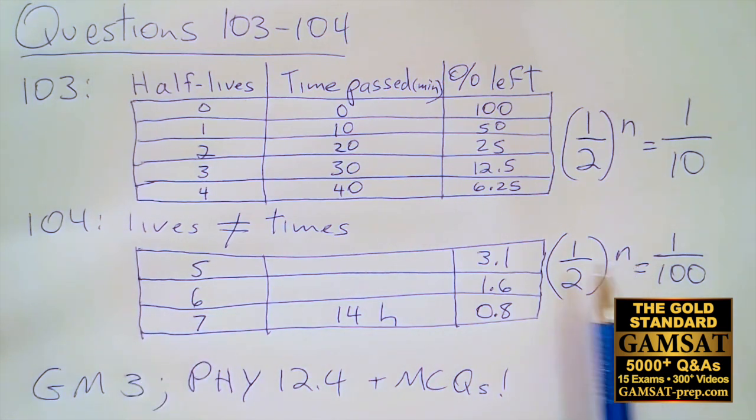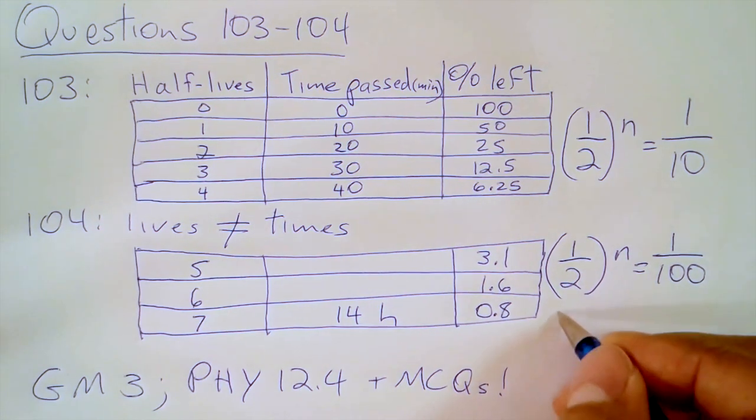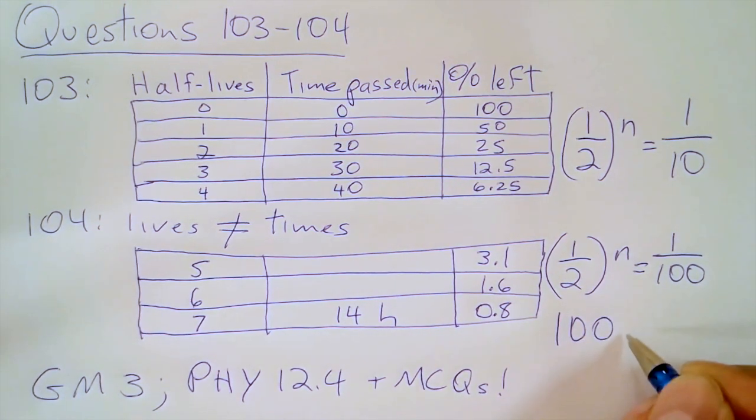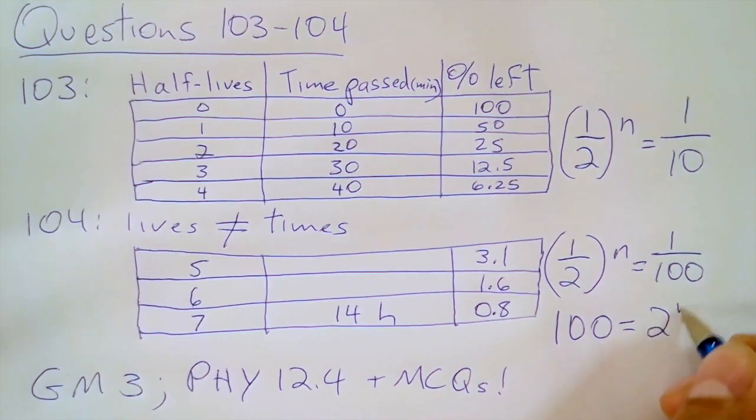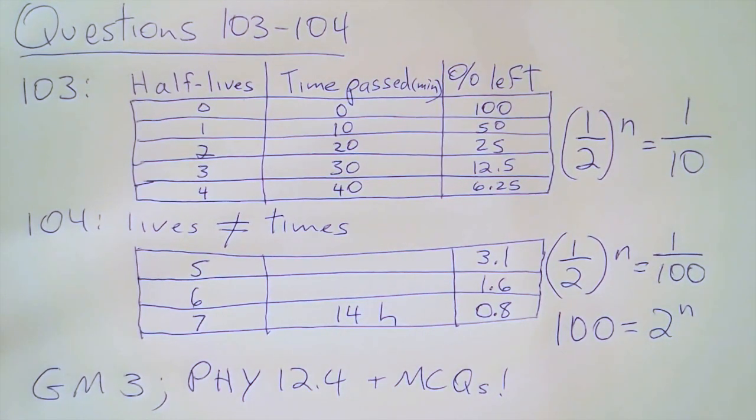The alternative solution is to realize (1/2)^n equals 1/100. Through cross multiplication, 100 = 2^n. You would try 2^6, which would be 2, 4, 8, 16, 32, 64, which is too low. So double that for 2^7, that's 2 × 64, which is 128, so that's too high.